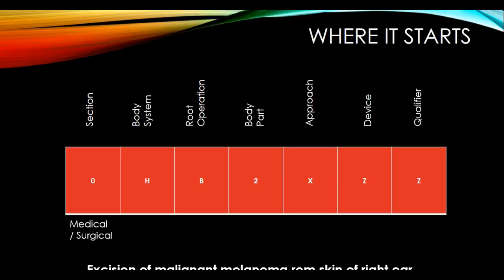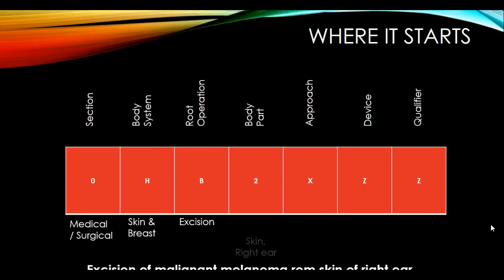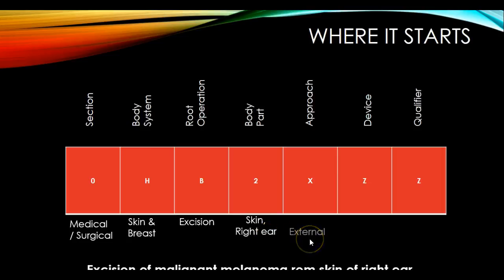The section is medical surgical, so you look for this code in the medical surgical section. The body system involved is the skin and breast — the skin of the right ear falls within that body system. The root operation is excision, as it's an excision of a malignant melanoma. The body part is the skin of the right ear. The approach is external — not an internal approach. There was no device mentioned.